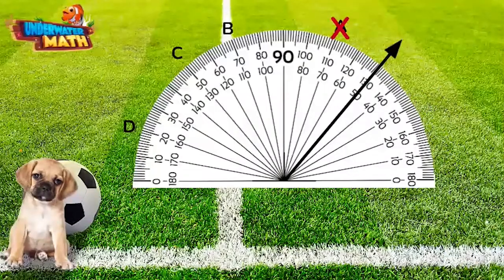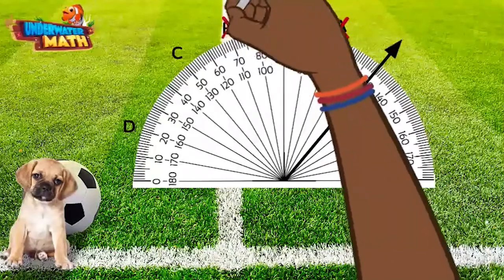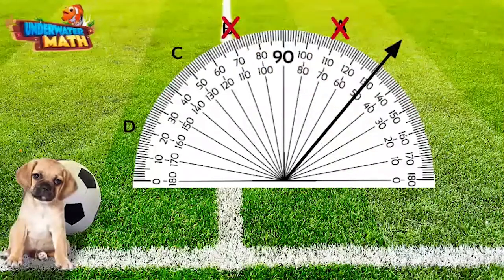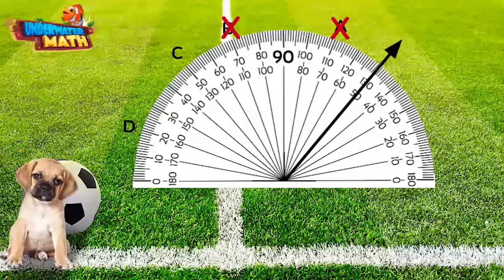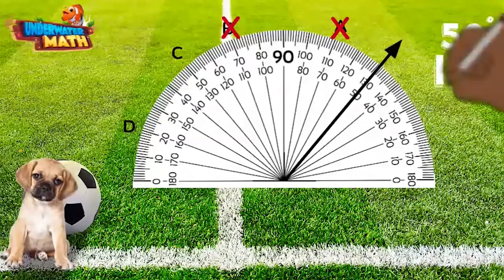We can say the same for point B. If we put a ray at point B, it would make an acute angle. 110 degrees isn't acute, so neither of these options are correct. To find the distance of 110 degrees, we need to add 110 to 50 degrees.